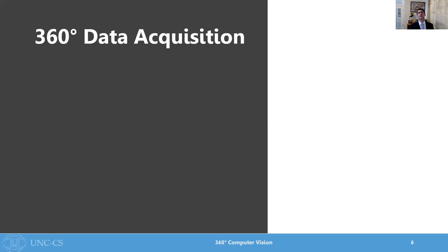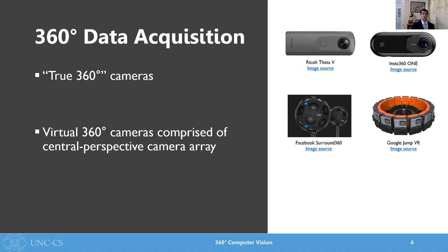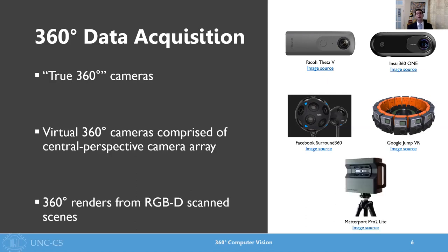We can capture these spherical images in a few different ways. It's actually impossible to build a camera with a perfect single spherical lens due to certain engineering constraints, but there are specialty cameras like the Ricoh Theta or the Insta360 that produce spherical images using special mirrors. These are called catadioptric cameras. Other cameras like Facebook's Surround 360 or Google's Jump VR capture spherical images using a special multi-camera rig with an array of central perspective cameras aligned to the same effective center projection. This is known as a polydioptric or multi-lens camera. The final common source of spherical images is by virtually rendering them from 3D models, using a depth scanning camera like the Matterport Pro 2 to build a high quality 3D model of a scene and then using graphics tools to render those scenes into a virtual spherical camera.